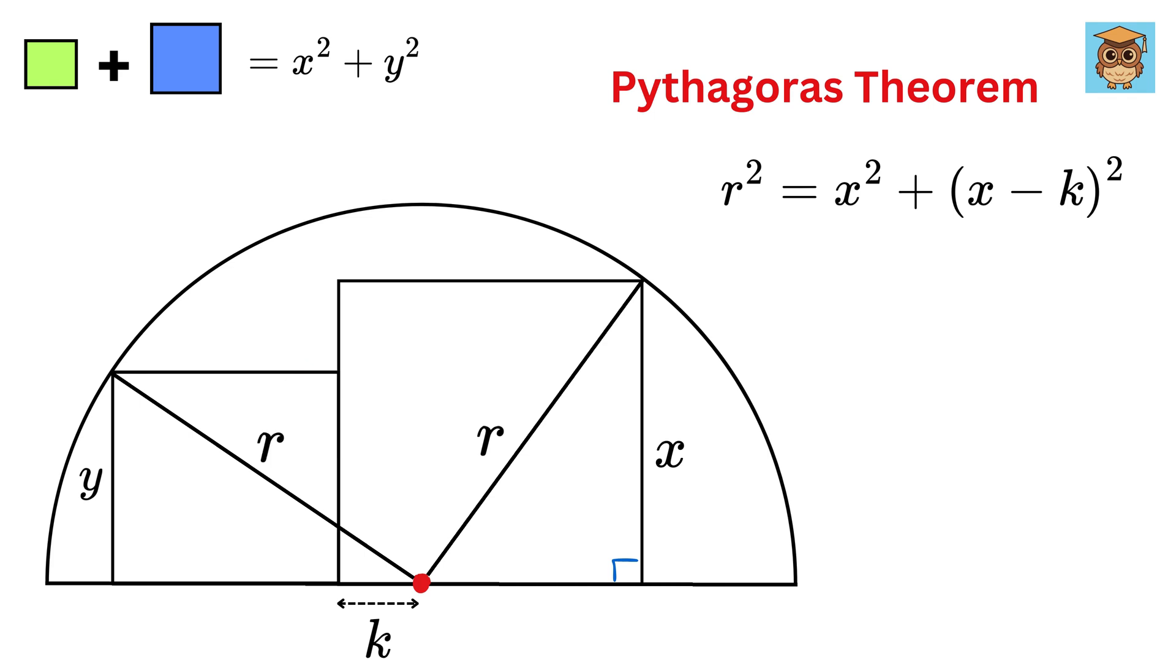So using Pythagoras, we get R squared equals y squared plus (y plus K) whole squared.